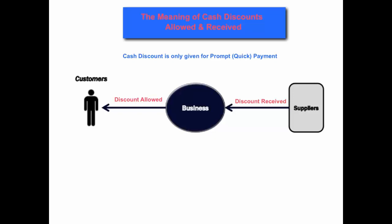The cash discount is different — it needs to be entered into the double entry system because it's only going to be taken up if the person pays early. So we would only enter it into the double entry system if it actually happens, and because we don't know whether a buyer or seller is actually going to take advantage of paying early and getting an extra discount, we have to wait and see, and if it does happen we put it into our T accounts.